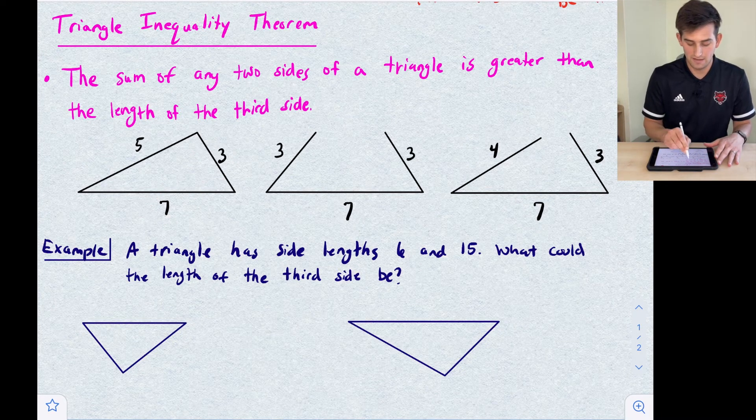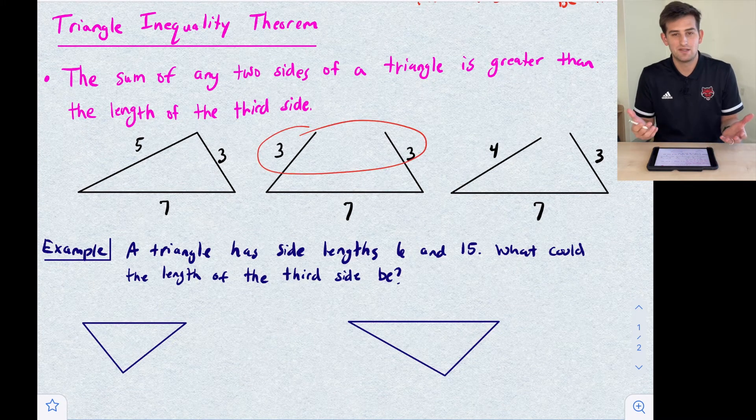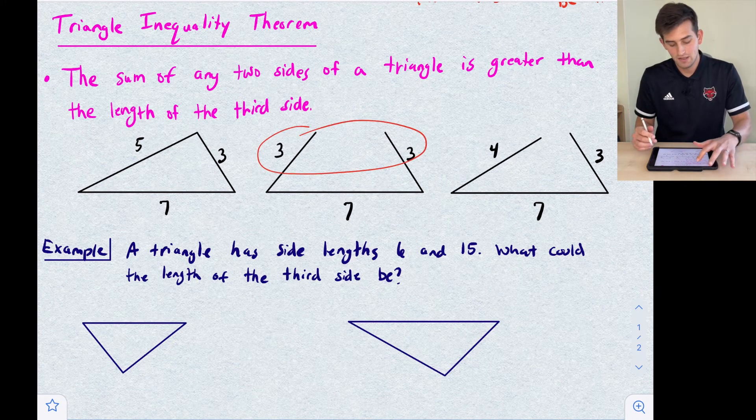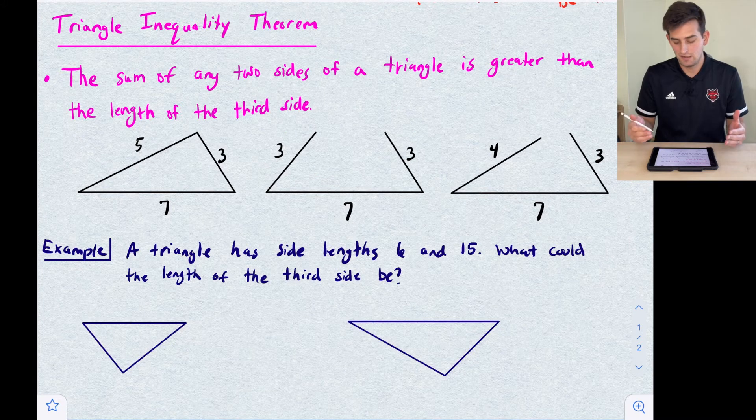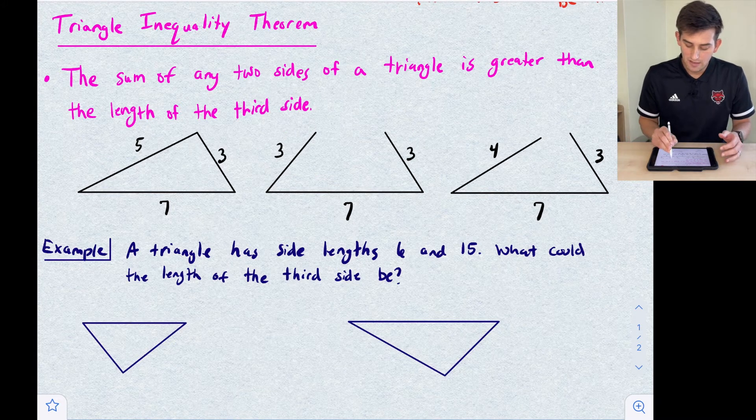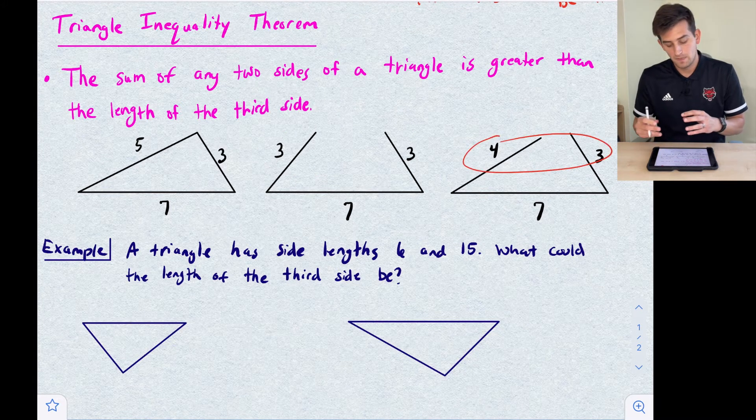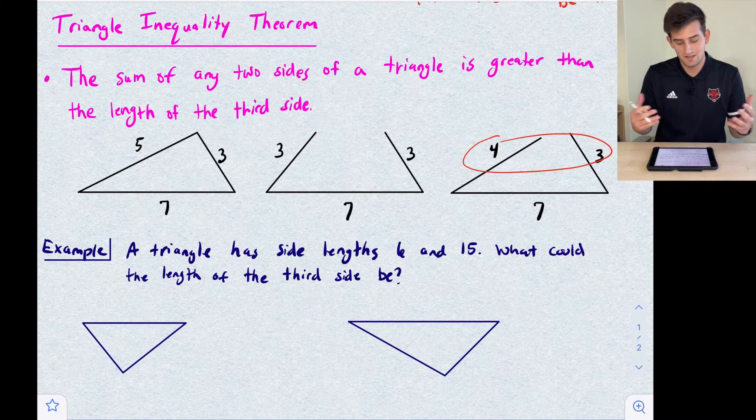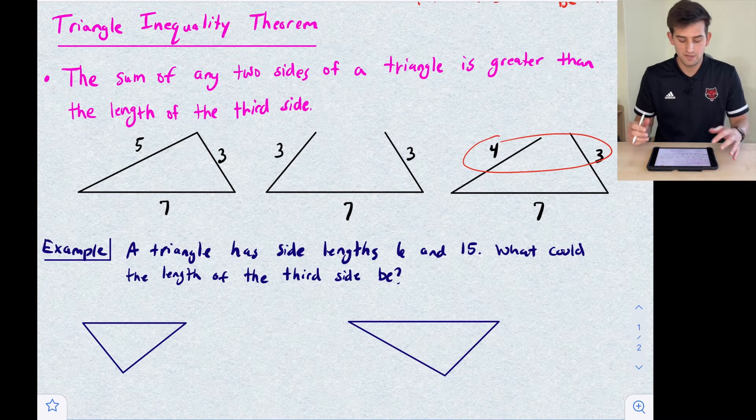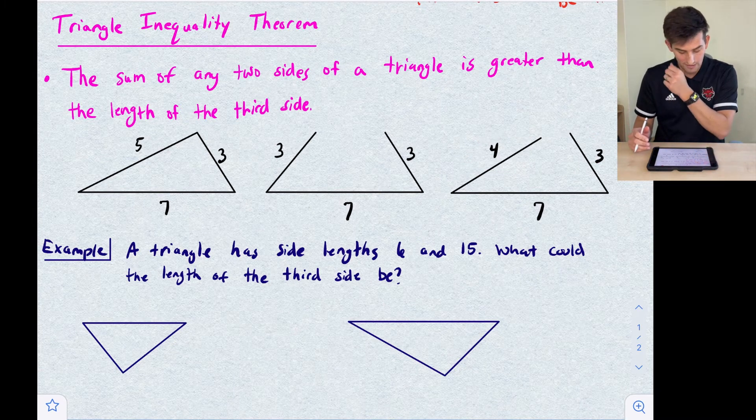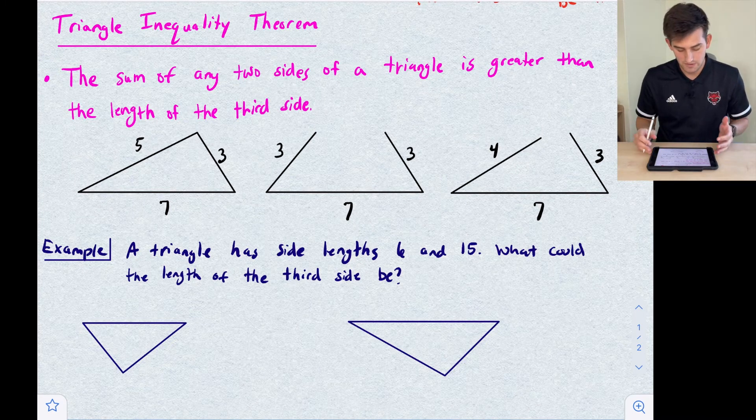On the next one, if we add these two sides we only get 6, and 6 is not greater than 7. You can see how our triangle doesn't connect there. The last one, we can add 3 and 4 to get 7, but 7 is equal to 7, so that doesn't satisfy our inequality theorem. Once again, our two sides won't connect.